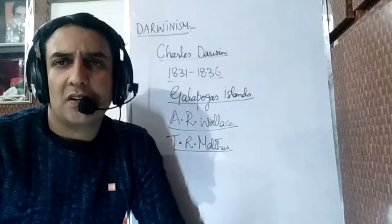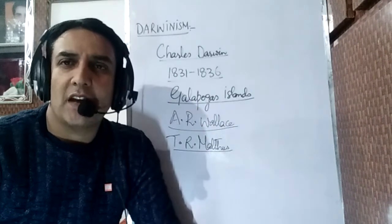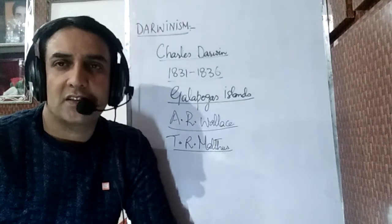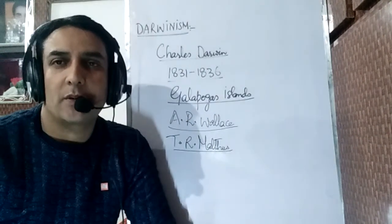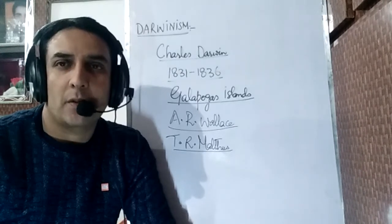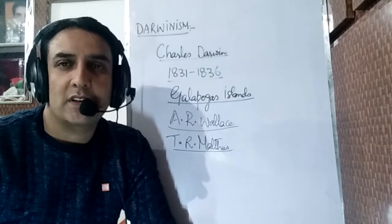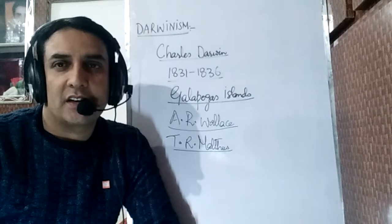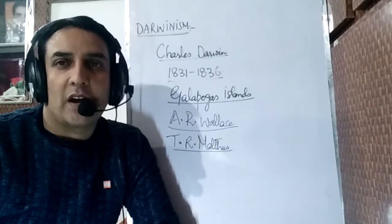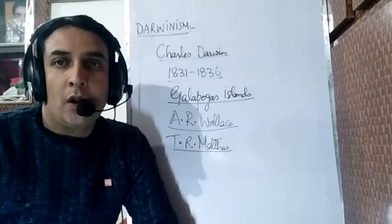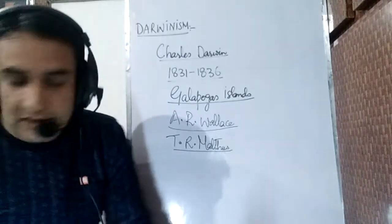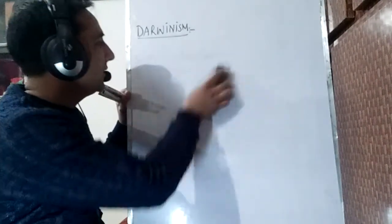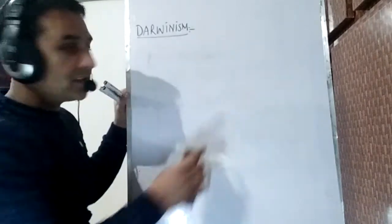This was the general background and summary of how Darwin accumulated ideas by combining his own research with that of Alfred Russell Wallace and Thomas Robert Malthus. He gathered all the information and put forth a very famous theory called the Darwinist theory of natural selection, published in his book 'On the Origin of Species by Means of Natural Selection.' Now we shall discuss the different points of the Darwinist theory.